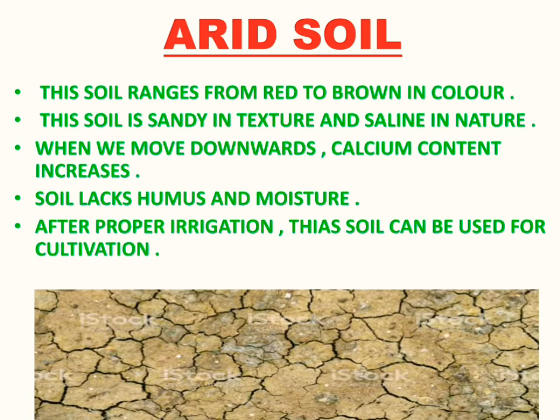The calcium content at the upper layer of this soil is low, and as we move downwards calcium content increases. The soil lacks humus and moisture. After proper irrigation, this soil can be used for cultivation. I have written only those points which are important and which can come in your paper.